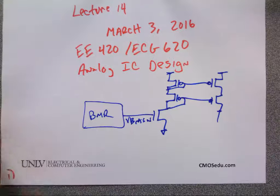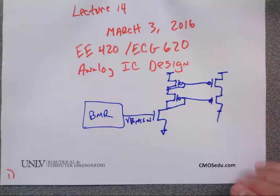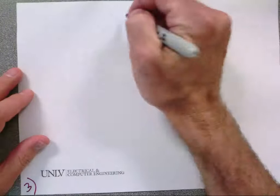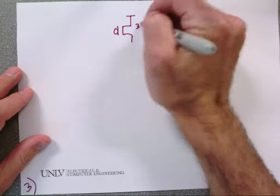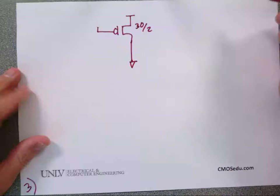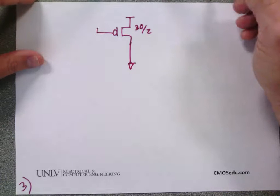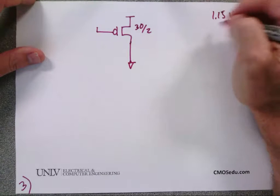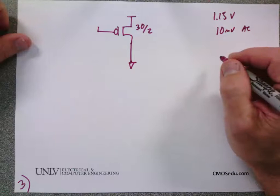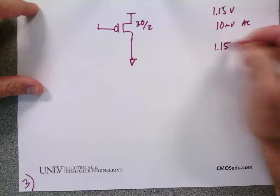Let's talk about amplifiers now, because you're all biasing gurus. I'm going to do an example and do a SPICE simulation too. First: if I have 1.1 V DC and an AC signal of 10 millivolts at 1 kHz, can I write the total voltage as 1.15 plus 10 millivolts?